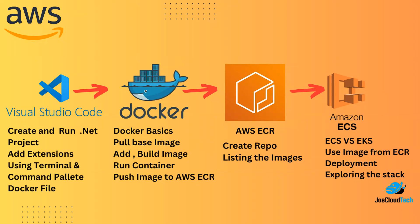You can have a look at my previous video for how we utilize the Visual Studio Code terminal, what is the command palette, how we create a Docker file, and the basic commands of Docker. Those things were discussed in my previous video. In today's video we will discuss more precisely AWS ECR — Amazon Elastic Container Registry — and we will push the image we created last time into AWS ECR.